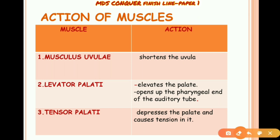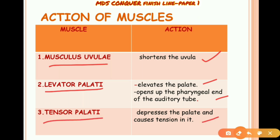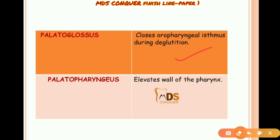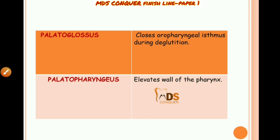Regarding muscle actions: musculus uvulae shortens the uvula; levator palatini elevates the palate and opens the pharyngeal end of the auditory tube; tensor palatini depresses the palate and causes tension in it; palatoglossus closes the oropharyngeal isthmus; and palatopharyngeus elevates the wall of the pharynx. This table is important and can be reproduced in exams.